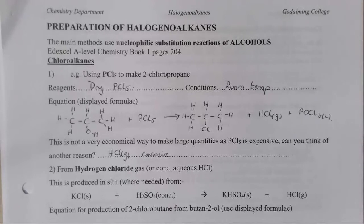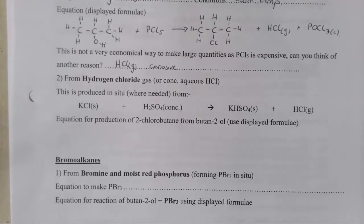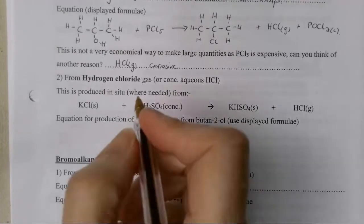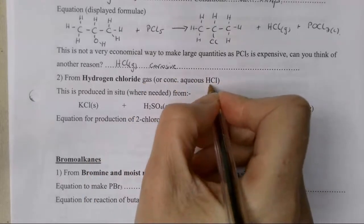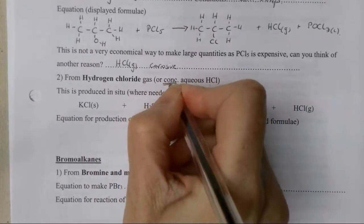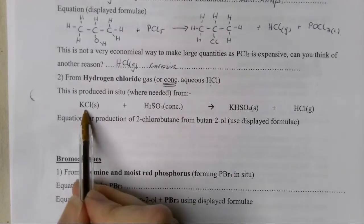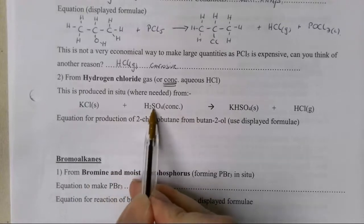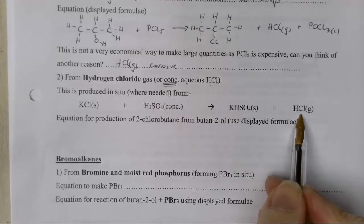Another way of making a chloroalkane is by using hydrogen chloride gas. You need to be careful here. You either use hydrogen chloride gas or concentrated hydrochloric acid, but it must be concentrated. Generally speaking, we make this in situ where it's needed. We're reacting potassium chloride with concentrated sulfuric acid to produce HCl in situ.